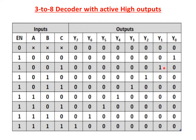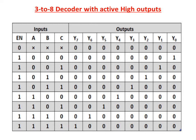For active high output, the selected outputs are represented as logic 1. When enable input is 0, the decoder is deactivated and all outputs are 0. When enable inputs are high, the decoder is activated. With 3 selection lines we can make 8 combinations from 0,0,0 to 1,1,1. For 0,0,0 Y0 is selected (logic 1); for 0,0,1 Y1 is selected; for 0,1,0 Y2 is selected; for 0,1,1 Y3 is selected; for 1,0,0 Y4 is selected; for 1,0,1 Y5 is selected; for 1,1,0 Y6 is selected; and for 1,1,1 Y7 is selected. This is the function table for the 3-to-8 decoder.